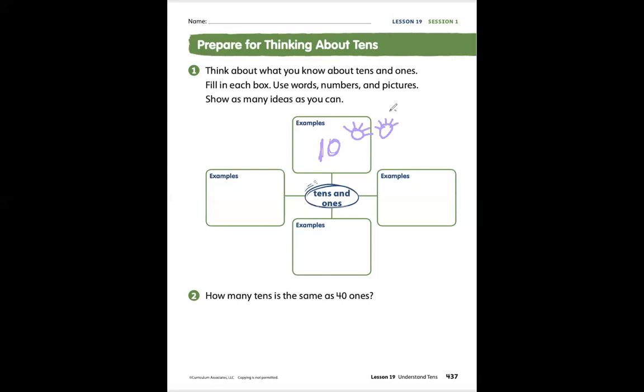And I have one group of 10, right? I could think of a group of 10 like a ten frame, five on top and five on bottom.